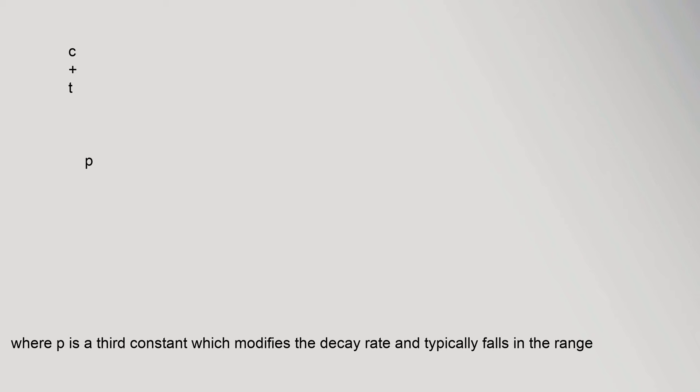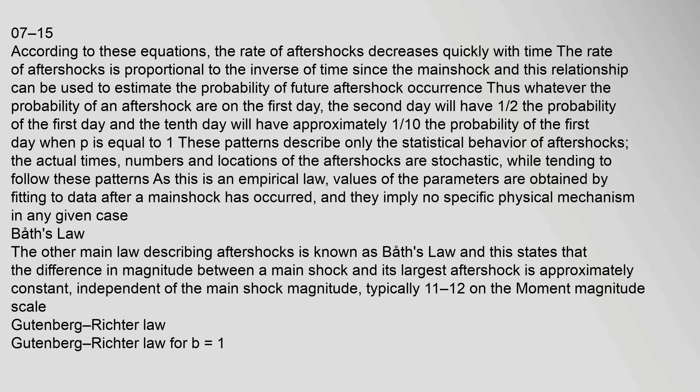P typically falls in the range 0.7–1.5. According to these equations, the rate of aftershocks decreases quickly with time, proportional to the inverse of time since the main shock. This relationship can be used to estimate the probability of future aftershock occurrence. Whatever the probability of an aftershock on the first day, the second day will have one-half the probability, and the tenth day will have approximately one-tenth the probability of the first day when P equals 1. These patterns describe only the statistical behavior of aftershocks; the actual times, numbers, and locations are stochastic. As this is an empirical law, values of the parameters are obtained by fitting to data after a mainshock has occurred and imply no specific physical mechanism.